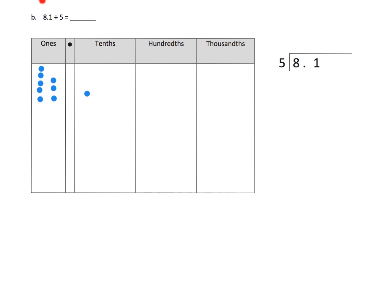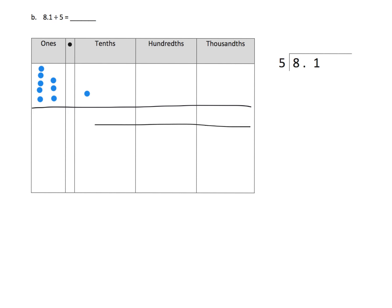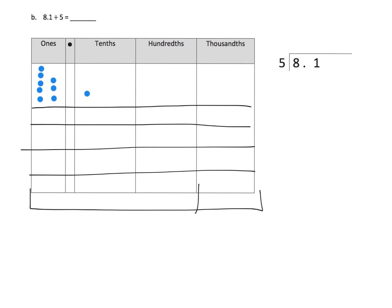We have 8.1 divided by 5, or 8 and 1 tenth divided by 5, and we're going to connect it with the standard algorithm. Parents and teachers, one key thing: students often say this backwards — they'll say 5 divided by 8.1 — so make sure we're clear on that. I'm going to demonstrate using the place value chart with five groups, because we're dividing by five.